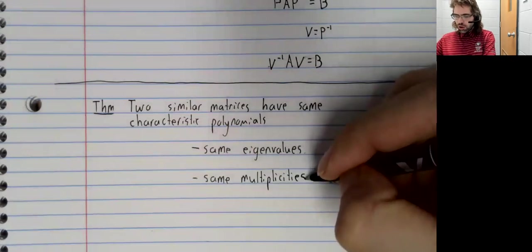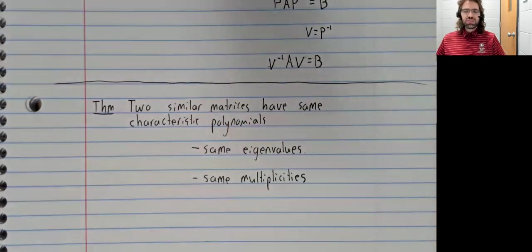So we can talk about their multiplicities. Two similar matrices have the same eigenvalues with the same multiplicities.